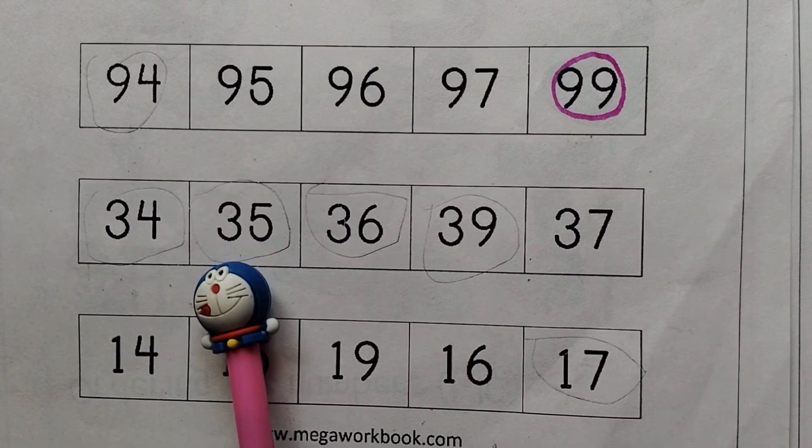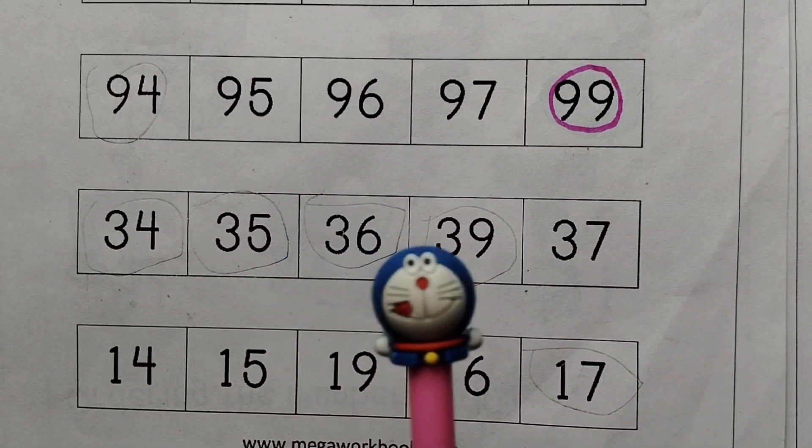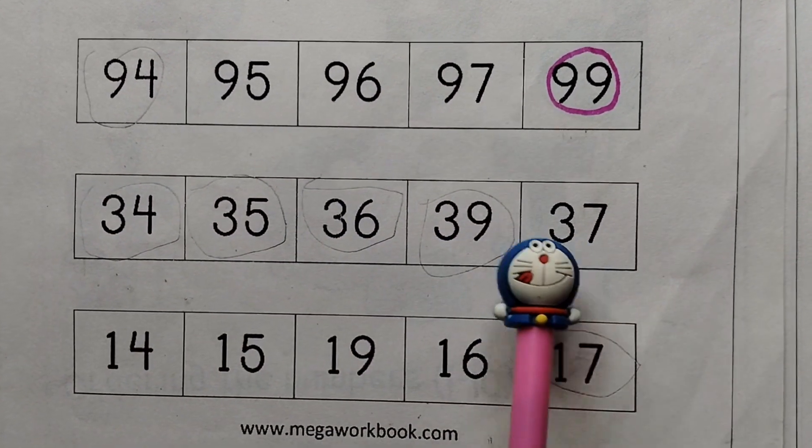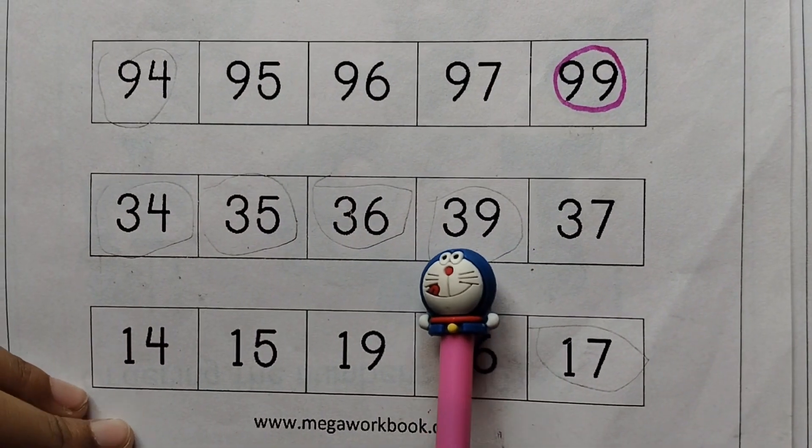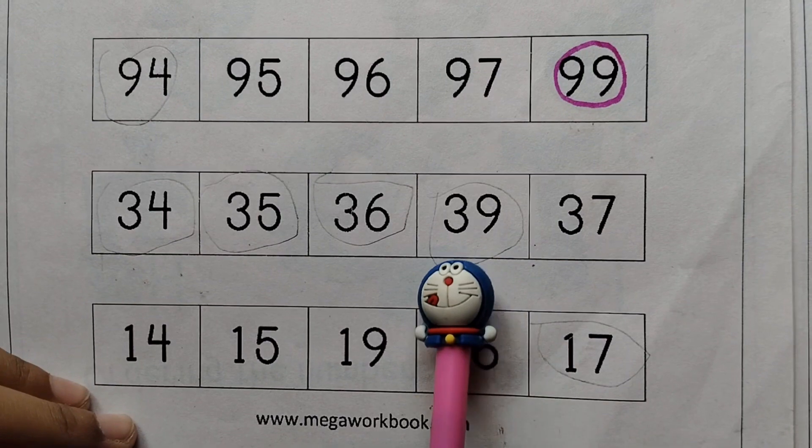34, 35, 36, 39, 37. 39 is the incorrect number in the sequence.